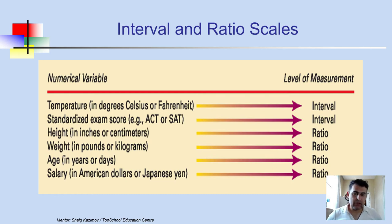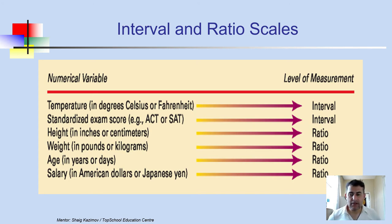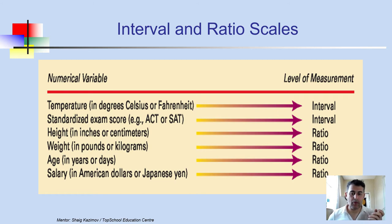The ratio scale has a true zero starting point. For instance, height — we cannot say we have minus 10 centimeters; height starts from zero and goes up. The same applies to weight, age, and salary — they all have a zero point. We cannot say something has a negative weight; for example, a cell phone has some definite positive weight.